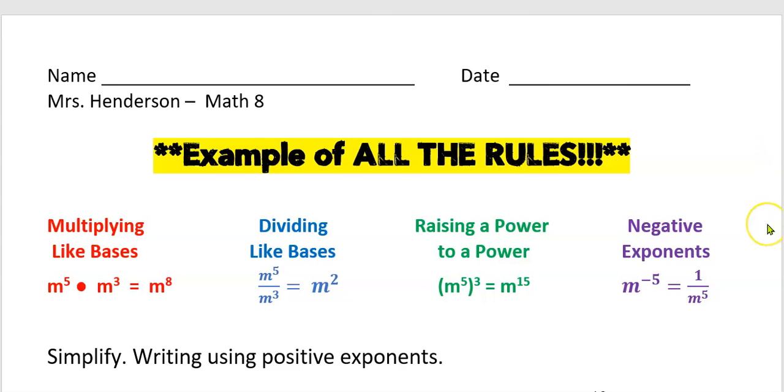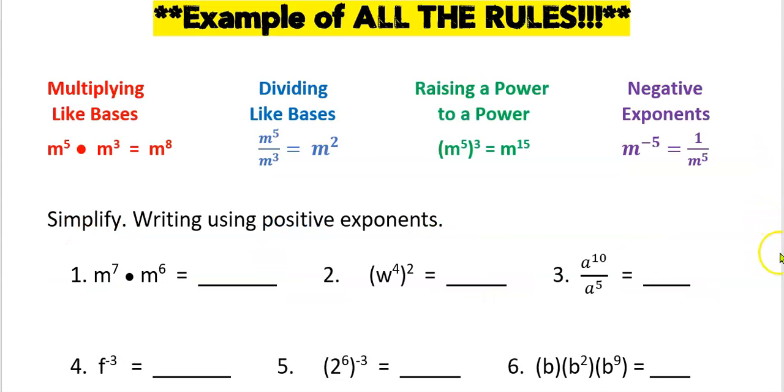Let's get started with the first section. The first section asks us to simplify writing using positive exponents. My first rule is multiplying like bases, so I'm going to add those powers together. Since my power is positive, there's no more work to be done.